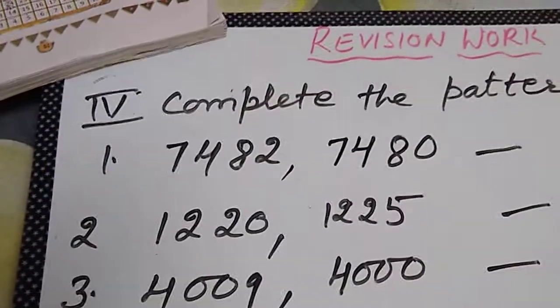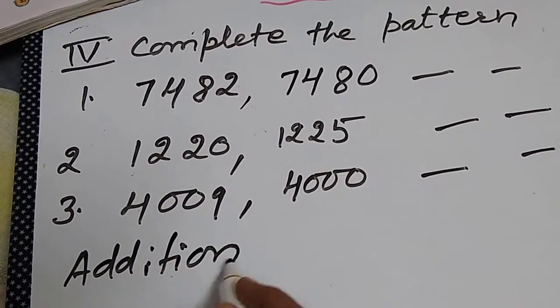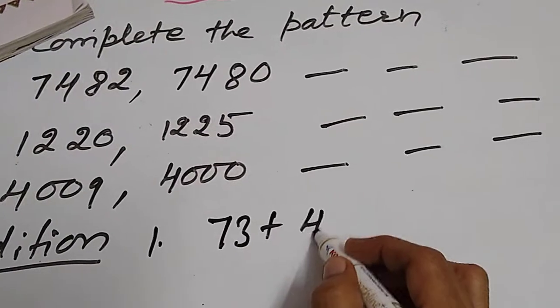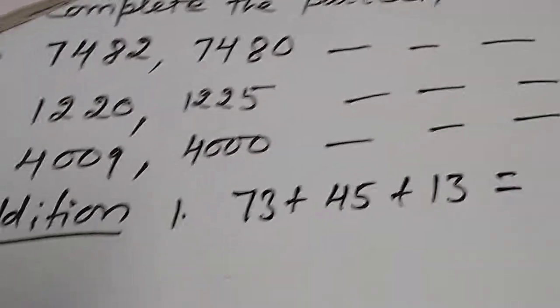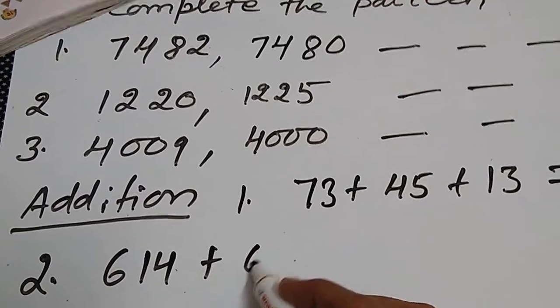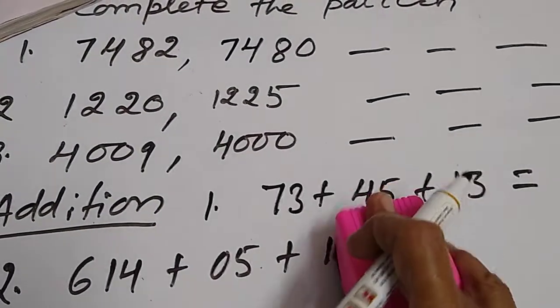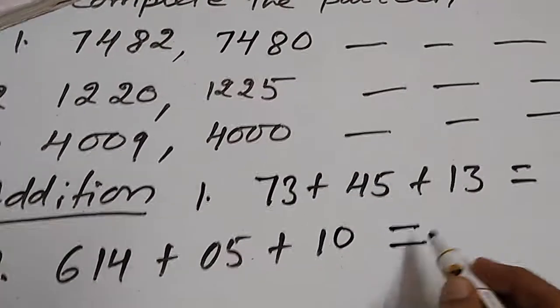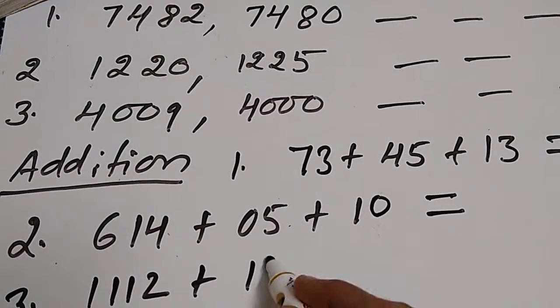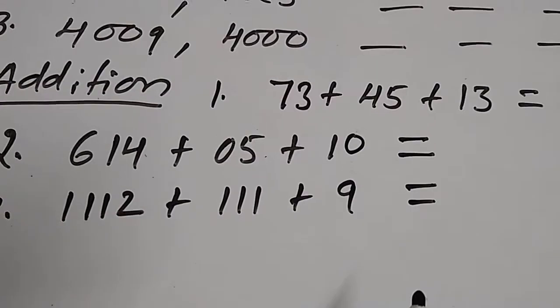Next is addition. 1: 73 plus 45 plus 13. 2: 614 plus 05 plus 13. 3: third one plus 12, 1 plus 9. These are the sums. We will do it and done.